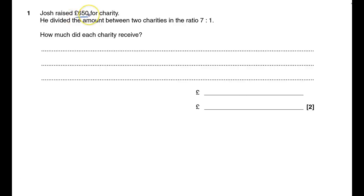Josh raised £650 for charity. He divided the amount between two charities in the ratio 7 to 1. How much did each one receive?